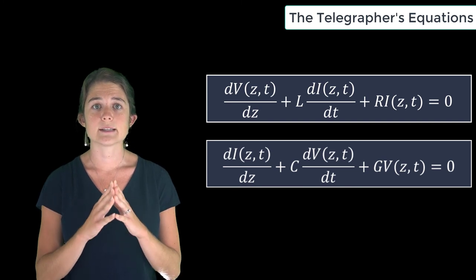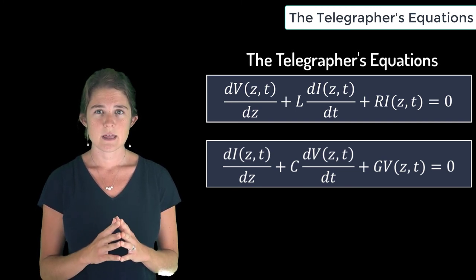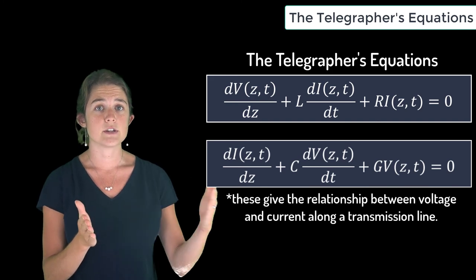The two spatial derivatives we've just obtained are known as the telegrapher's equations. They relate voltage and current along the length of the transmission line.